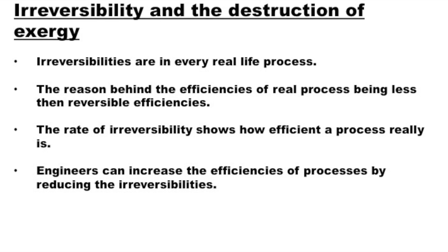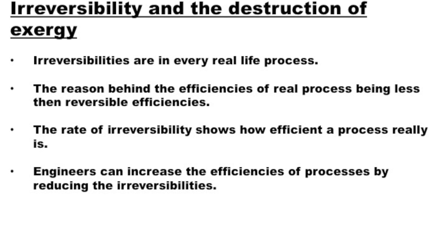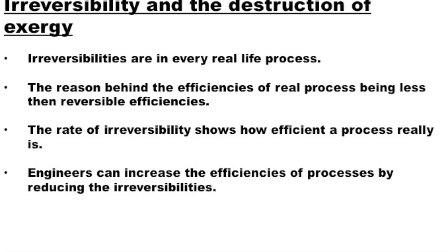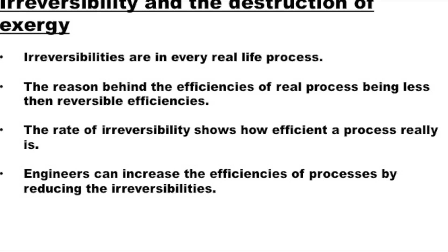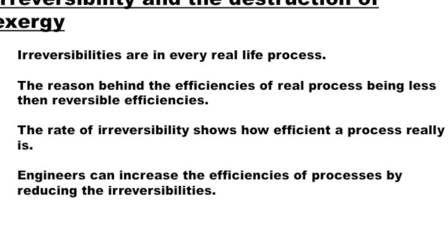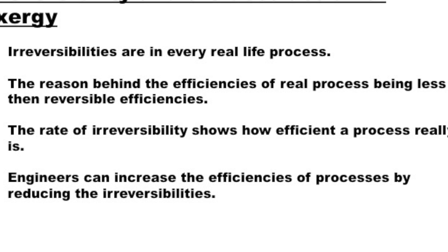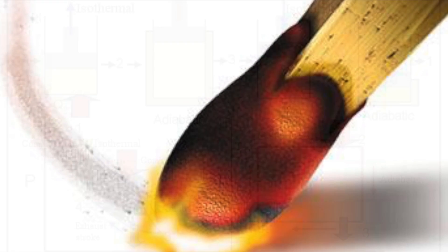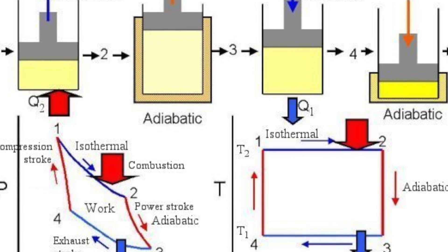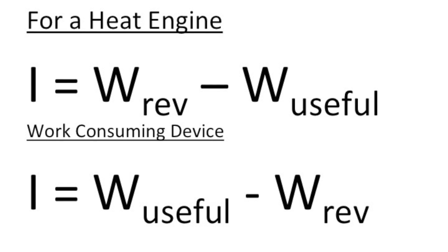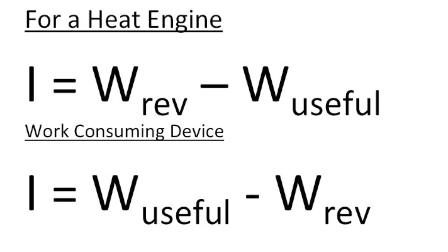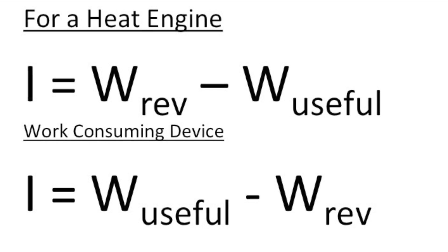We need to know a few things beyond exergy to make it a useful tool. Two valuable tools that come from exergy are reversible work and irreversibilities. Irreversibilities are the measure of exergy destruction — an example is something like friction. Reversible work is the maximum work that can be produced between two states. If we know the actual work output and the reversible work output, we can find the irreversibility of the process.